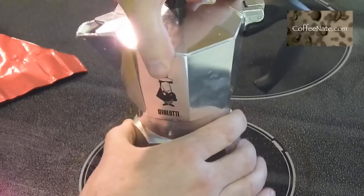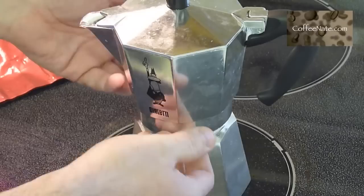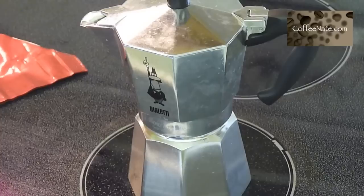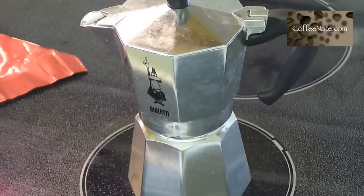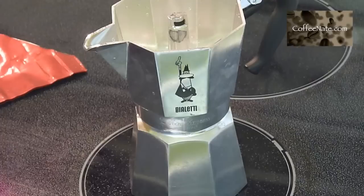Make sure it's nice and secure so that the pressure builds up and the water doesn't shoot out the sides there. So you just sit there and let this brew, and use a medium heat. About five to six minutes, the coffee will be ready.